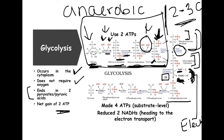Going from 1,3-bisphosphoglycerate to 3-phosphoglycerate, that inorganic phosphate that was placed on the molecule is going to be utilized to drive the first ATP production. Phosphoglycerate kinase — kinase again, transferring the phosphate — takes that phosphate from the first carbon of 1,3-bisphosphoglycerate to make ATP: ADP plus Pi gives you ATP. That is substrate-level phosphorylation — made directly in glycolysis. And since we're multiplying by two, we have two ATPs produced.